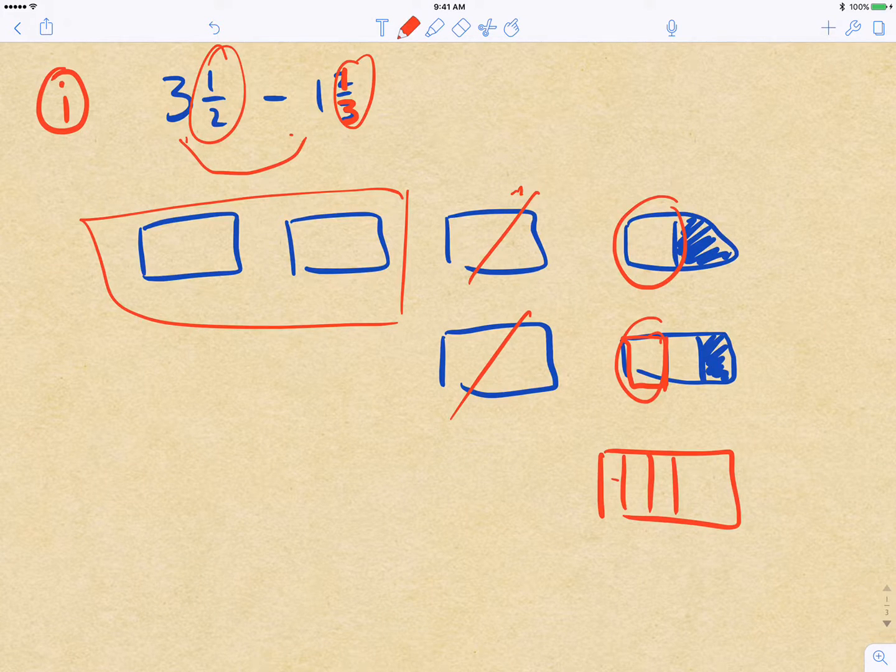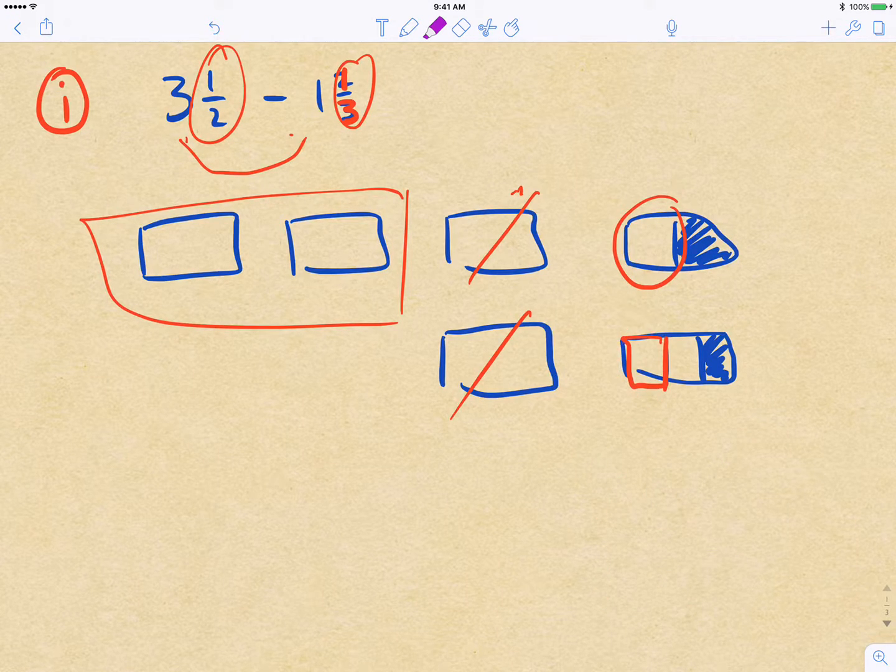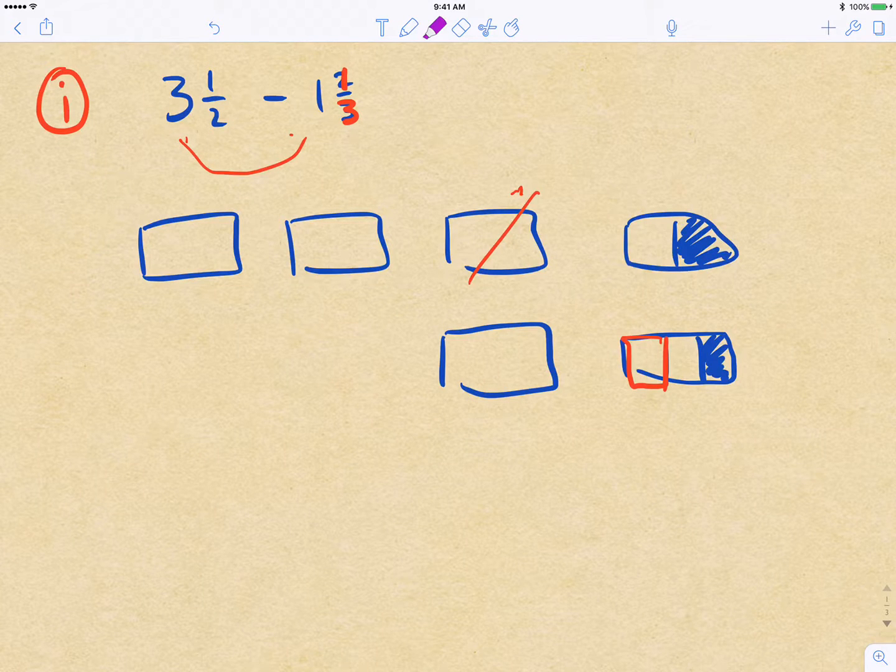If we convert ½, that's 3/6, and then ⅓ is 2/6. So all up, we'd be doing 3 minus 2 gives us 1/6. Unfortunately, that's not the case. So in our case, we actually do need to do a little bit of conversion into improper fractions.